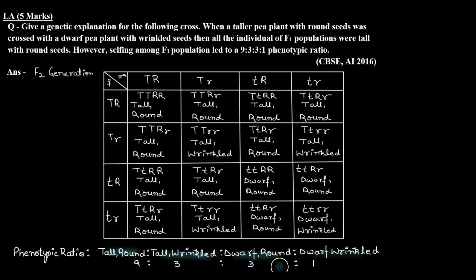This happens because the genes responsible for tall character and the genes responsible for round seeds, their assortment and segregation is independent of each other. This is called the law of independent assortment which Mendel gave on the basis of dihybrid cross.